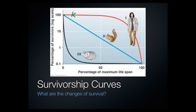The top curve is for a K-selected species. If you look at a K-selected species, most of the offspring survive their childhood. As you go through a percentage of life — this axis represents a percentage of maximum lifespan — most of them will make it towards their maximum lifespan. Then there's a very sharp die-off at the end.